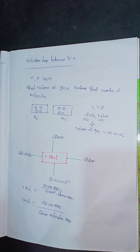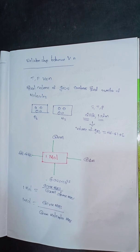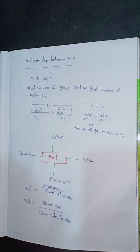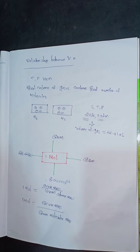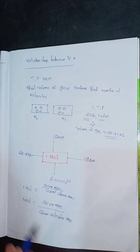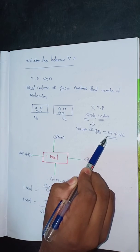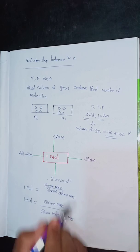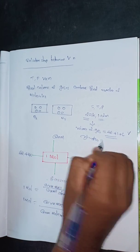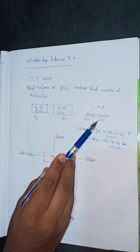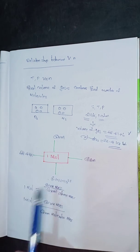All questions and problems are at STP — Standard Temperature and Pressure. At STP there is a specific condition: a gas occupies a volume of 22.414 L at 273 Kelvin and 1 ATM pressure.